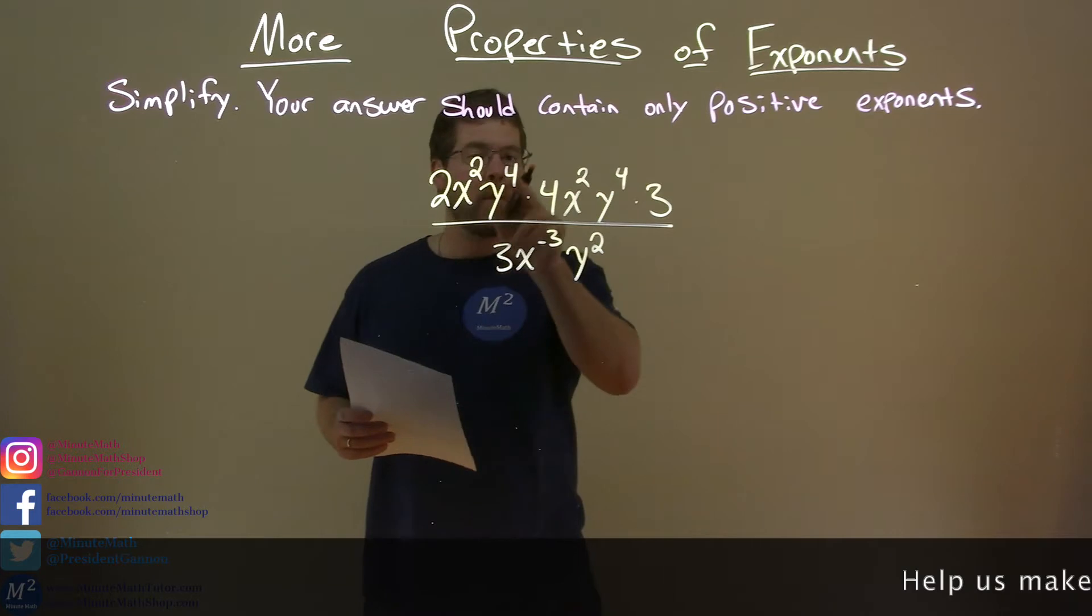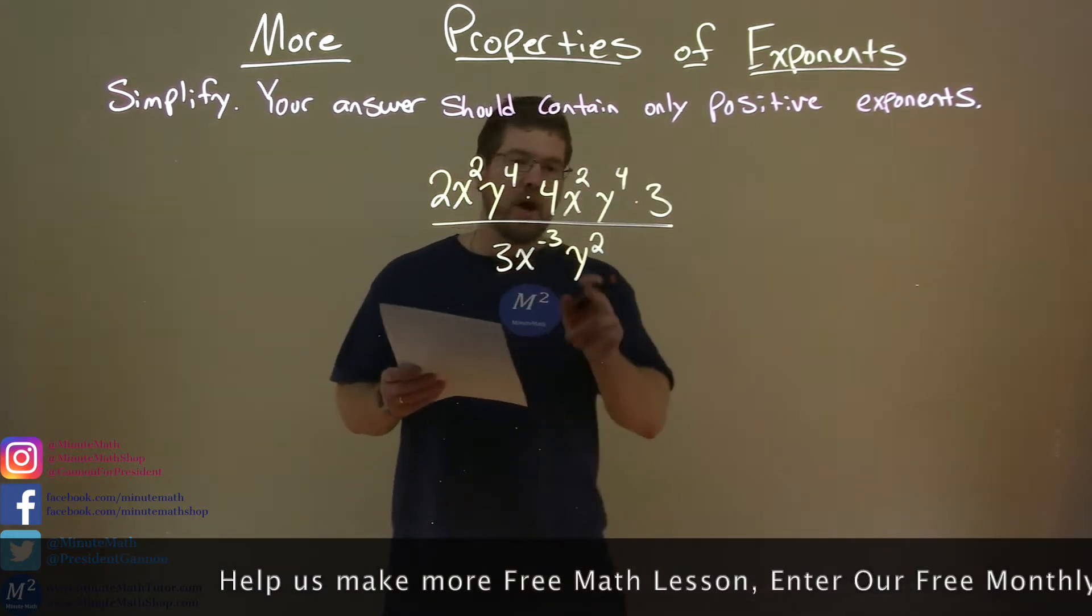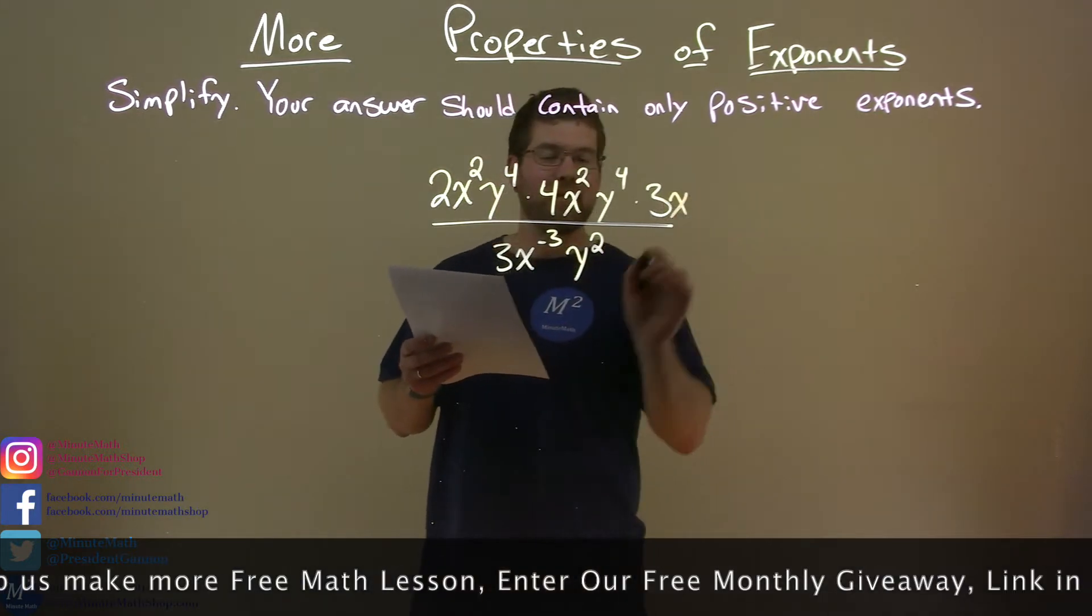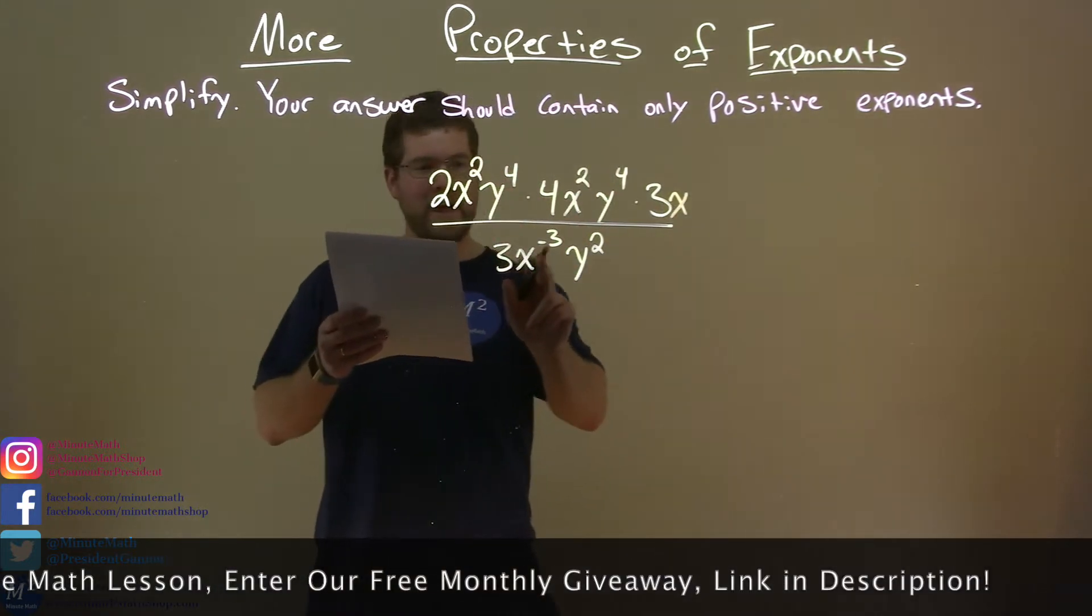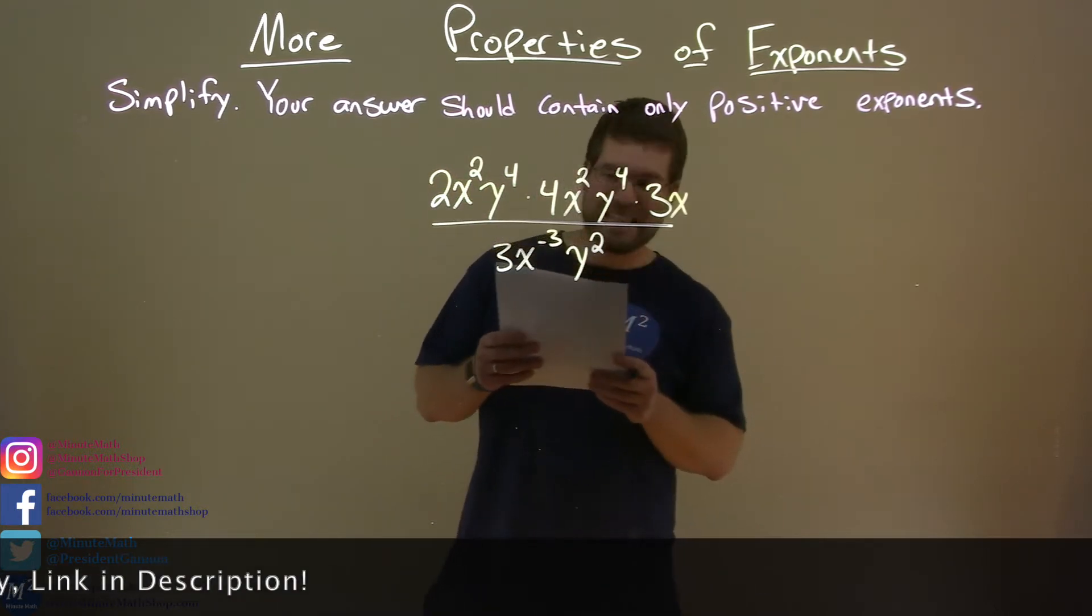2x squared y to the fourth times 4x squared y to the fourth times 3x, all over 3x to the third y squared. Let me double check and make sure I got everything, and I did.